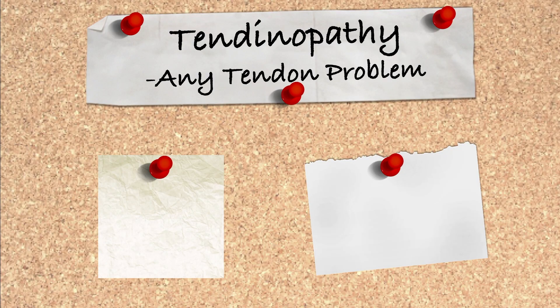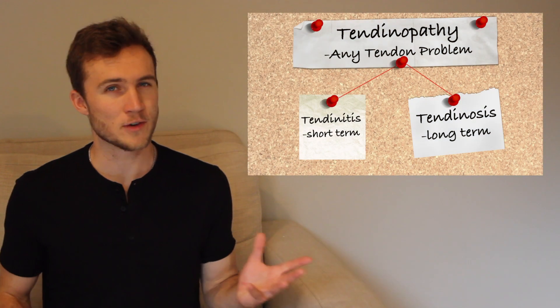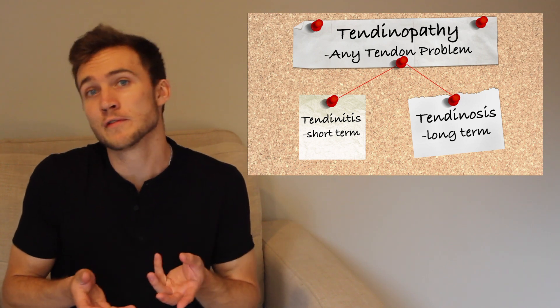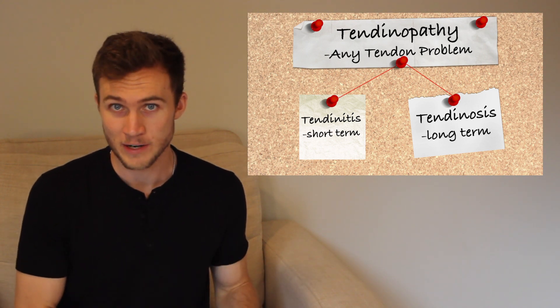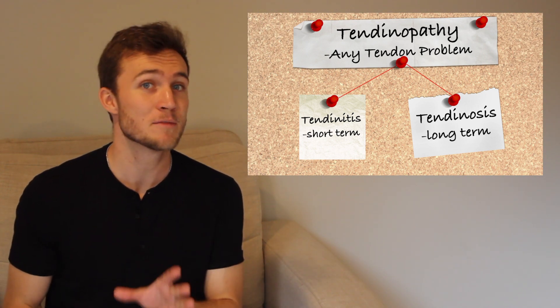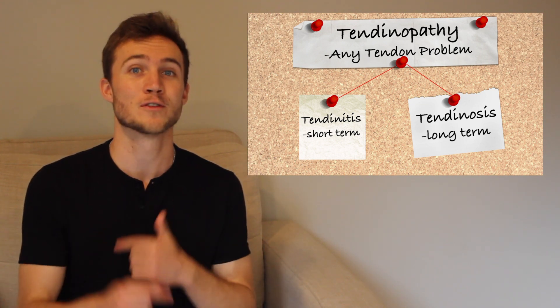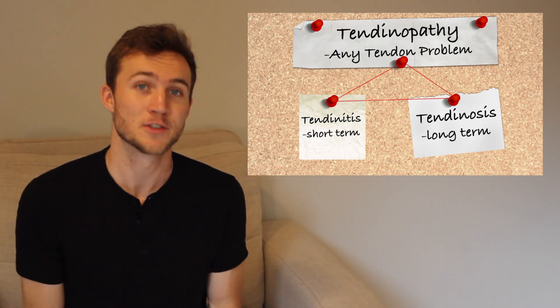When you use tendinopathy, it's not specific — you could be referring to a short-term irritation like tendinitis, or a long-term irritation like tendinosis. Tendinopathy is the umbrella term covering either tendinitis (that short-term inflammation) or tendinosis (a long-term breakdown). Just to clarify: because tendinitis is short-term, if it occurs over a long period of time it will result in tendinosis. This creates a fun little triangle effect on the graphic.